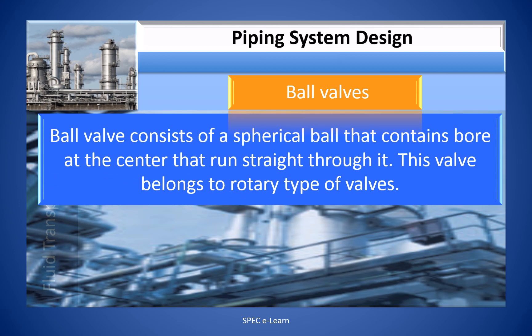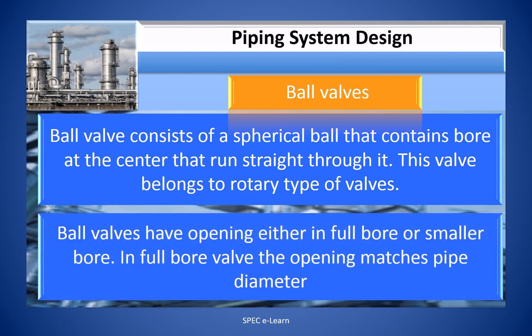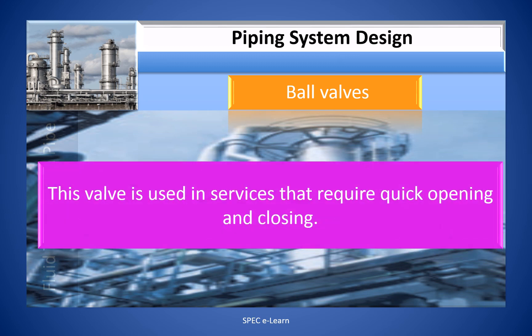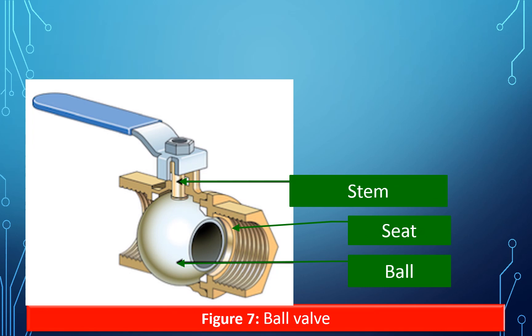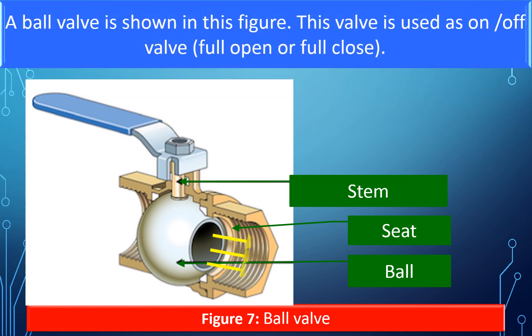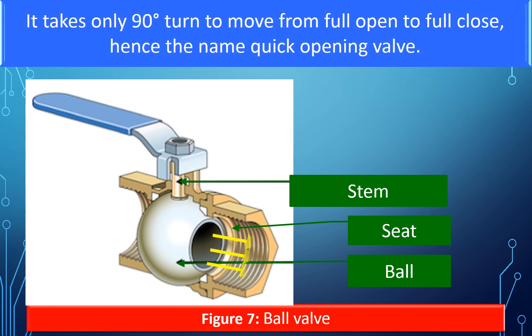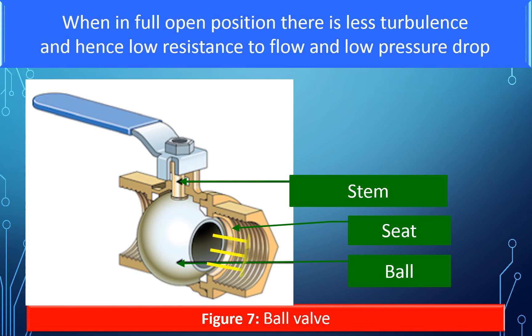The ball valve consists of a spherical ball containing a bore at the center that runs straight through it. This valve belongs to the rotary type of valves. Ball valves have openings either in full bore or smaller bore; in a full bore valve, the opening matches the pipe diameter. This valve is used in services that require quick opening or closing, as it takes only 90 degrees of turn to move from full open to full close — hence the name quick-opening valve. When in full open position, there is less turbulence, resulting in low resistance to flow and low pressure drop.